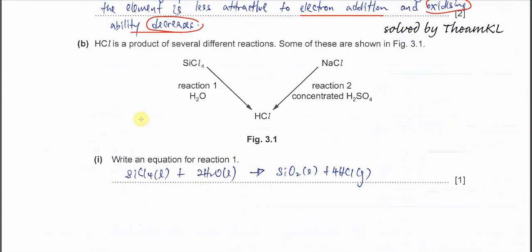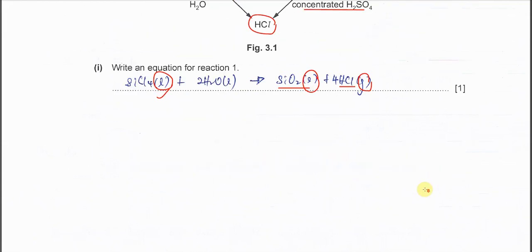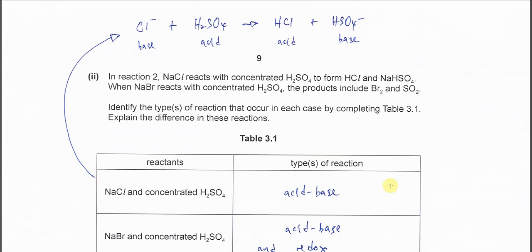Part B. We have two reactions. Reaction 1: SiCl4 with water also forms HCl, and NaCl with concentrated H2SO4 forms the same gas. Write an equation for reaction 1. SiCl4 liquid reacts with H2O liquid to form white precipitate SiO2 solid and HCl gas, which is the white fumes. Balance it. In reaction 2, NaCl reacts with concentrated H2SO4 to form HCl and NaHSO4.